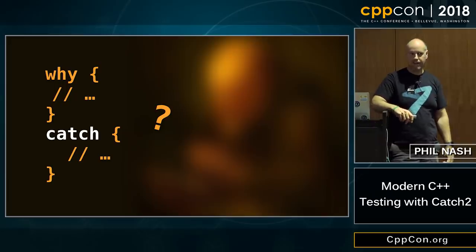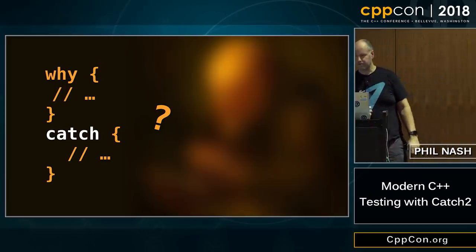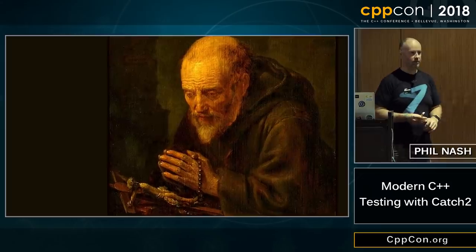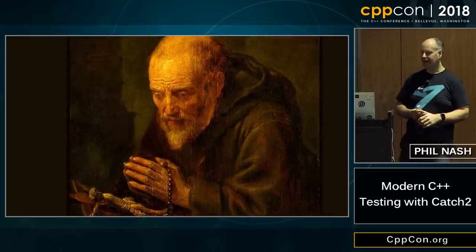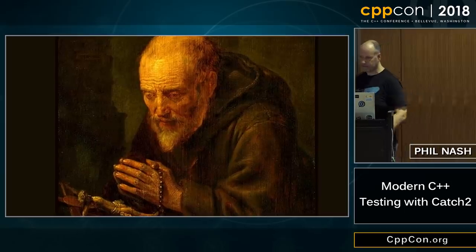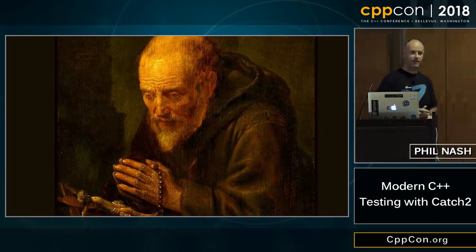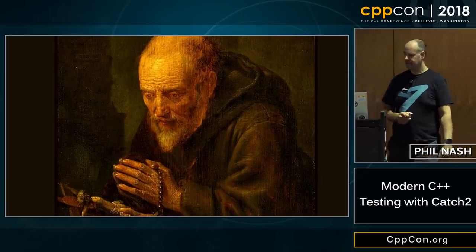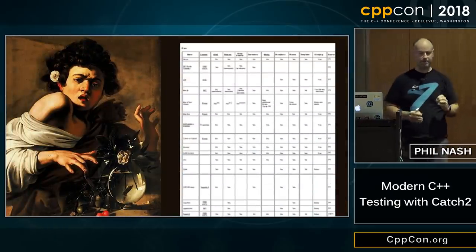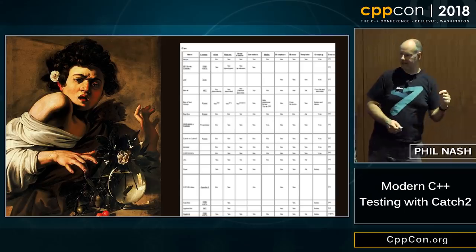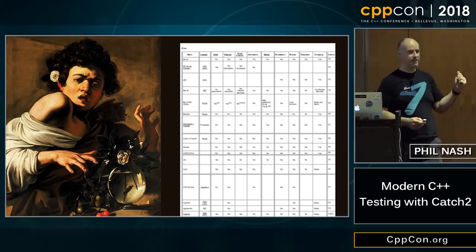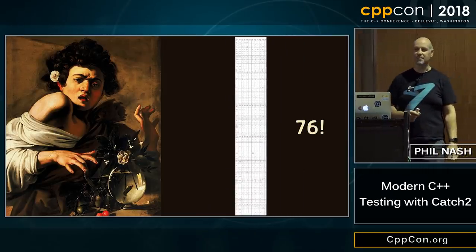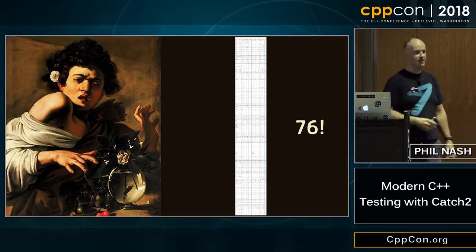Why did I write Catch in the first place? Back in 2010, I started work on a project where the approach to software quality was basically hope and pray, and I was running into a lot of problems. I started looking at what the state of the art with regards to testing was in C++. There's a Wikipedia page with all the test frameworks broken down by language, and the list for C++ is quite big — 76 entries, and that's not exhaustive.